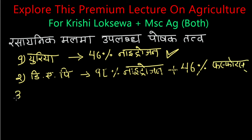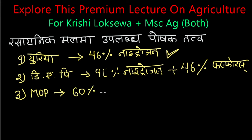Number 3, I have to look at MOP — the muriate of potassium. The muriate of potassium is going to be 60% potassium. We also use potassium, calcium.